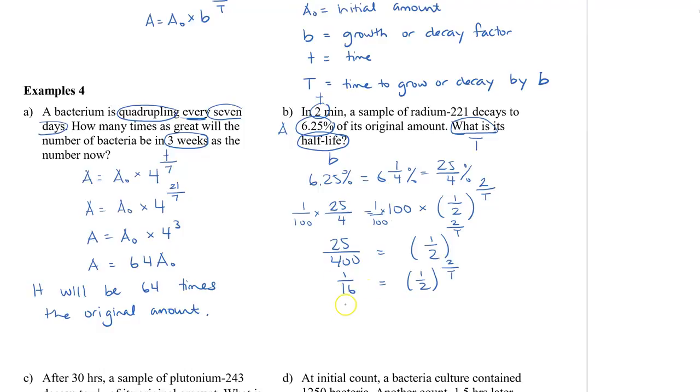1 over 16, we can rewrite that as 1 half to the power of 4 equals half to the power of 2 over T. Since the bases are the same, then we can say that the exponents are the same. So we have 4 is equal to 2 over T. And then times both sides by T, divide both sides by 4. So T is equal to 2 over 4, or equals half a minute.